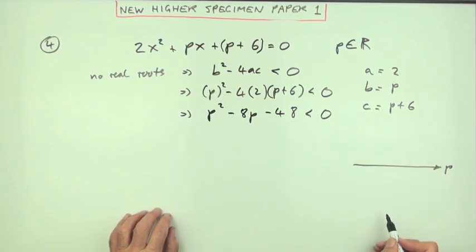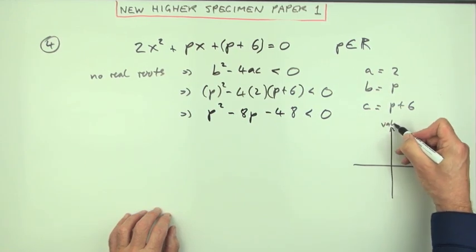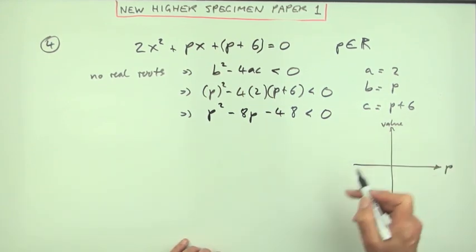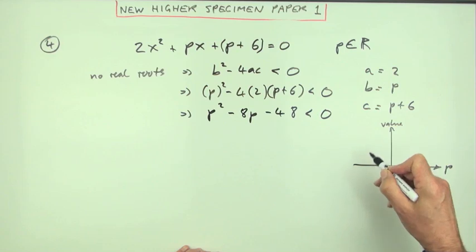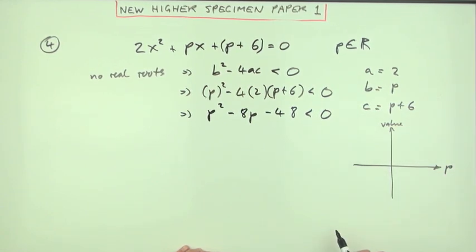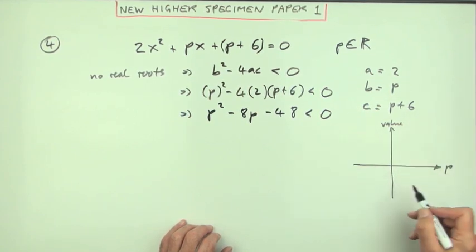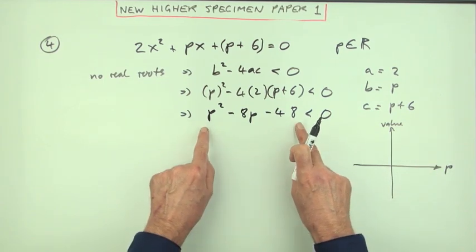If you plot the values, you'll produce a quadratic. Since p² is positive, it's the right way round. How can I place this parabola appropriately? I know it crosses at -48, which tells me it'll cross and go back up, so there will be two intersections.